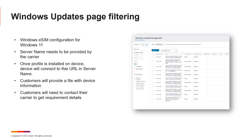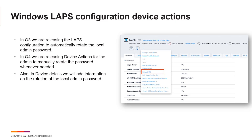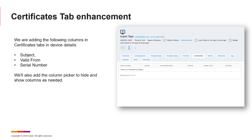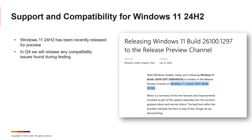On the Windows roadmap: we can now filter the updates page, making it easier to find new Windows 11 features. We're adding the Windows LAPS configuration with a new key to rotate the password. We have certificate step enhancements, and we're working on supporting the upcoming Windows 11 24H2 update.